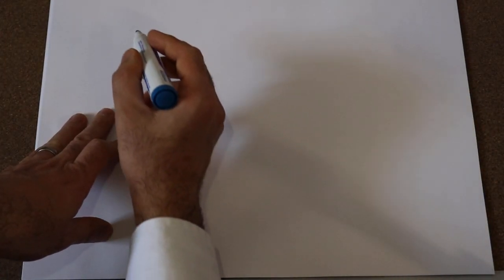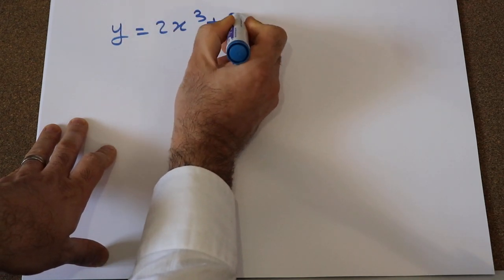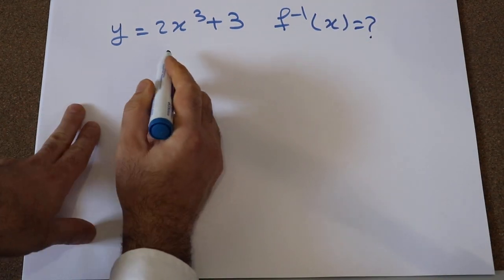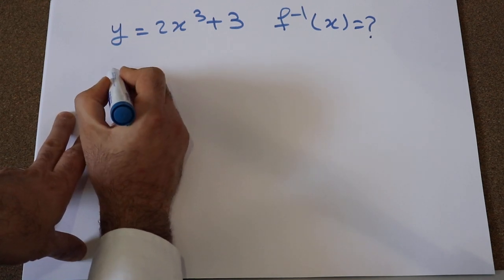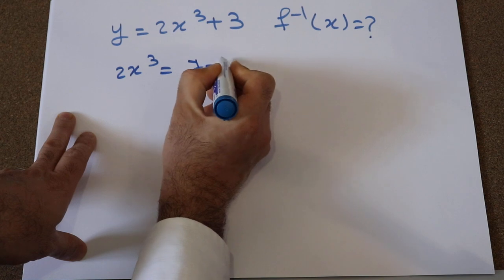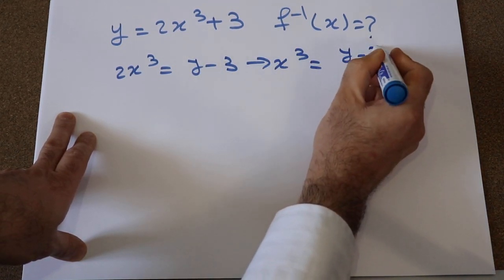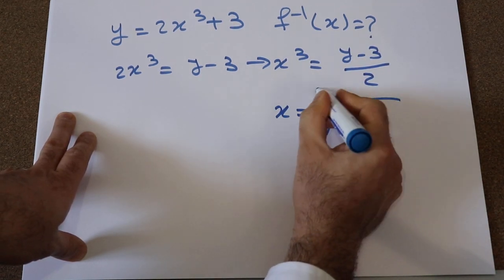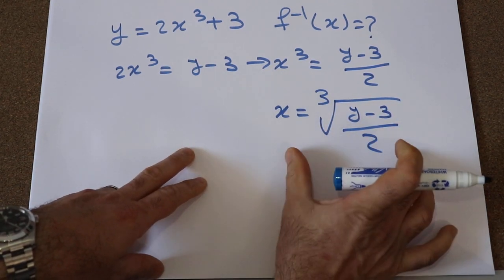Let me solve another example — example number four. If the function y is defined as 2x³ plus 3, calculate the inverse of this function. Same approach: first express x as a function of y. From this equation, 2x³ equals y minus 3, therefore x³ equals (y minus 3) divided by 2. That means x equals the cube root of [(y minus 3) divided by 2]. That is the end of step one.